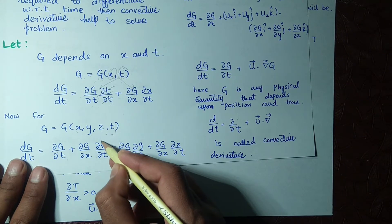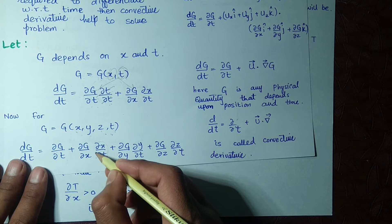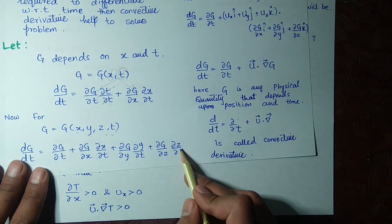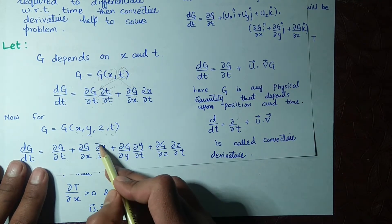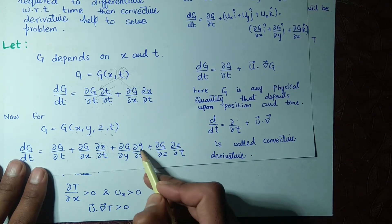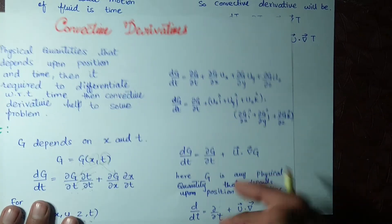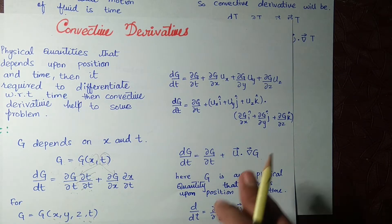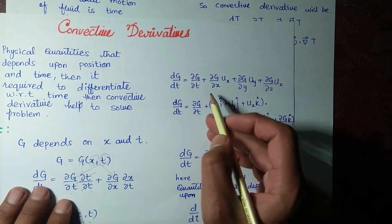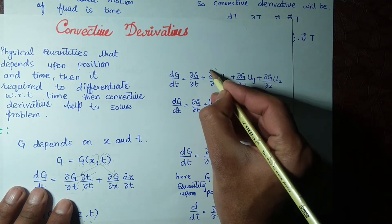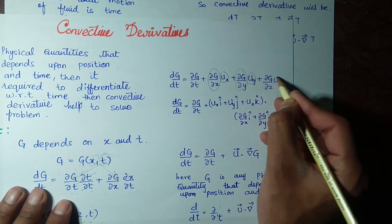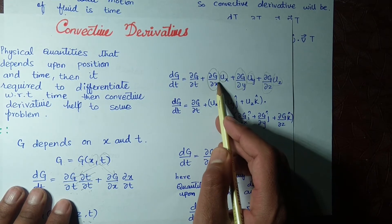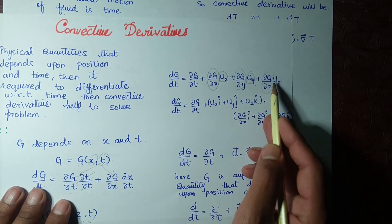We recognize that ∂x/∂t is the velocity in the x-direction, ∂y/∂t is the velocity in the y-direction, and ∂z/∂t is the velocity in the z-direction. We write these as u_x, u_y, and u_z. These velocity components can be separated out using a dot product.